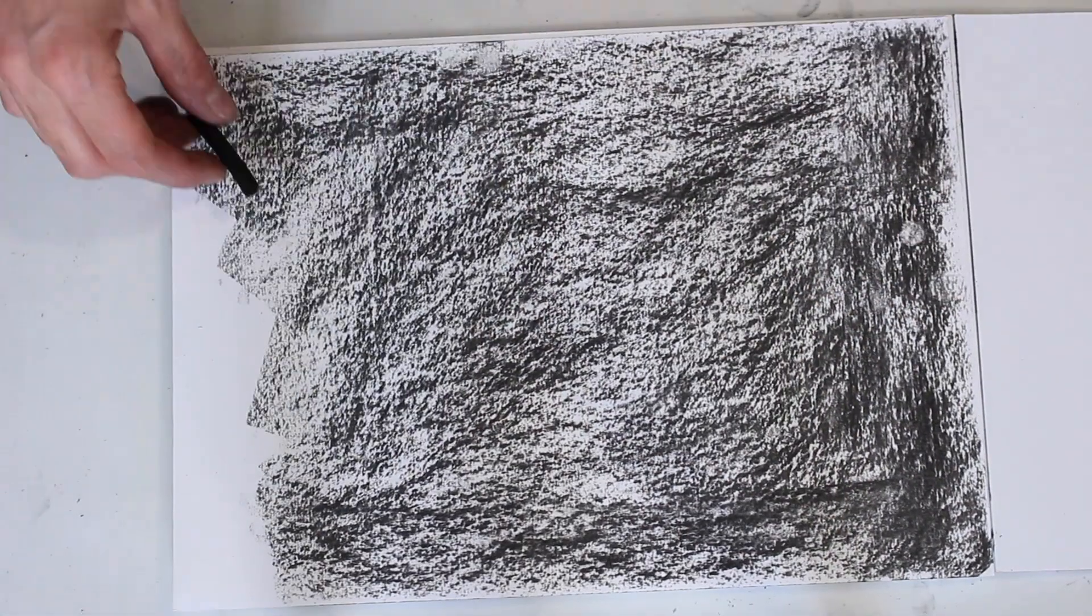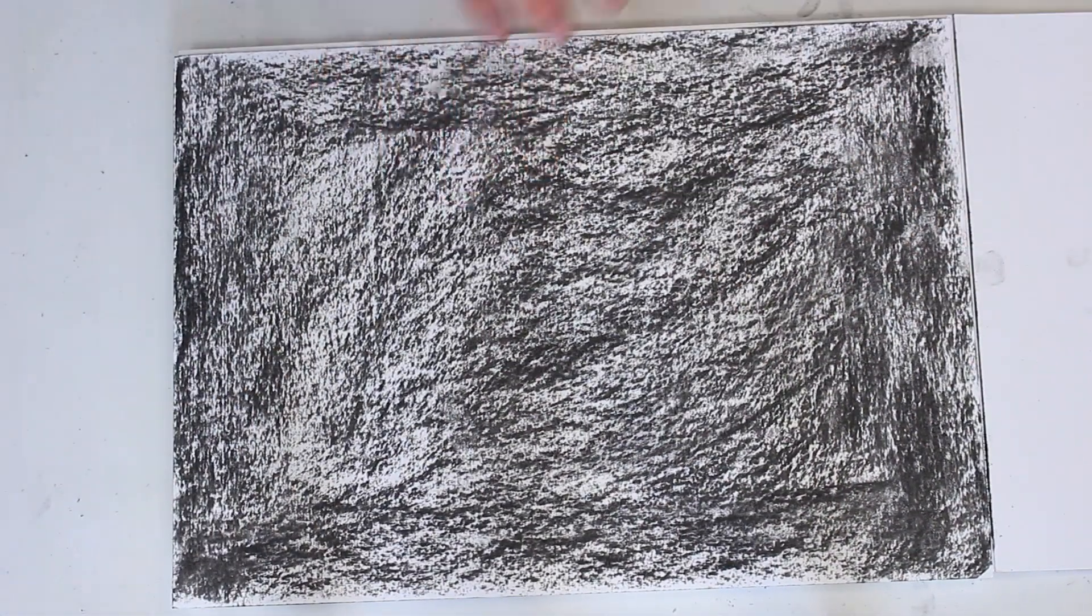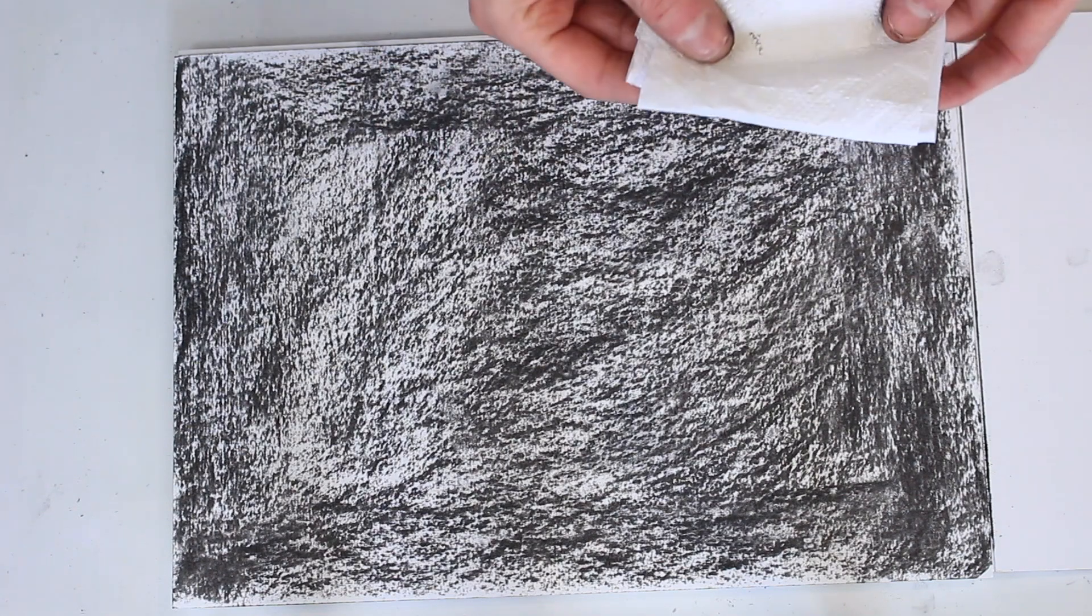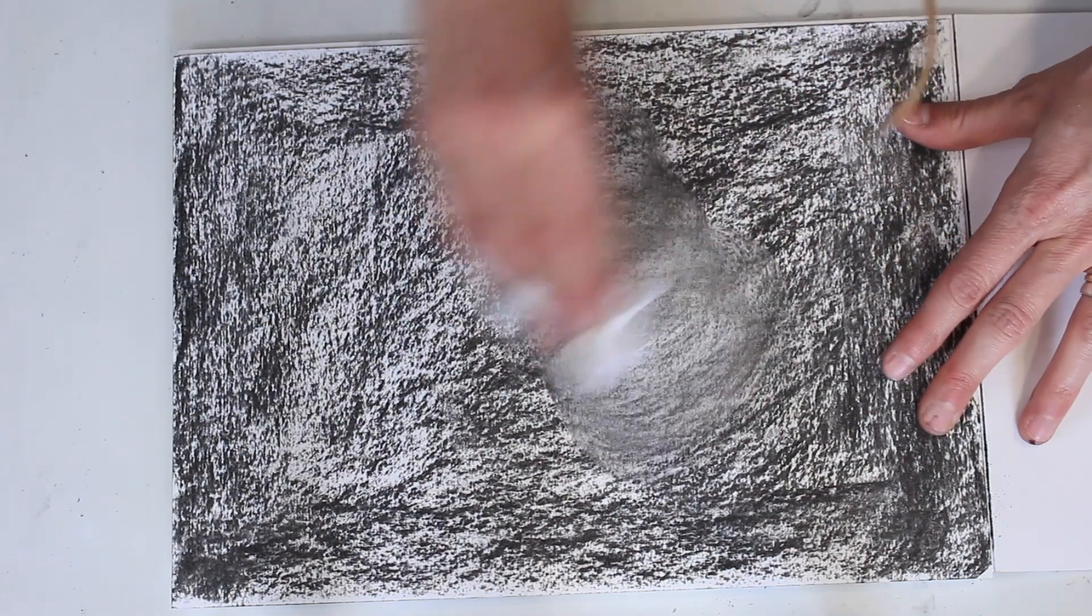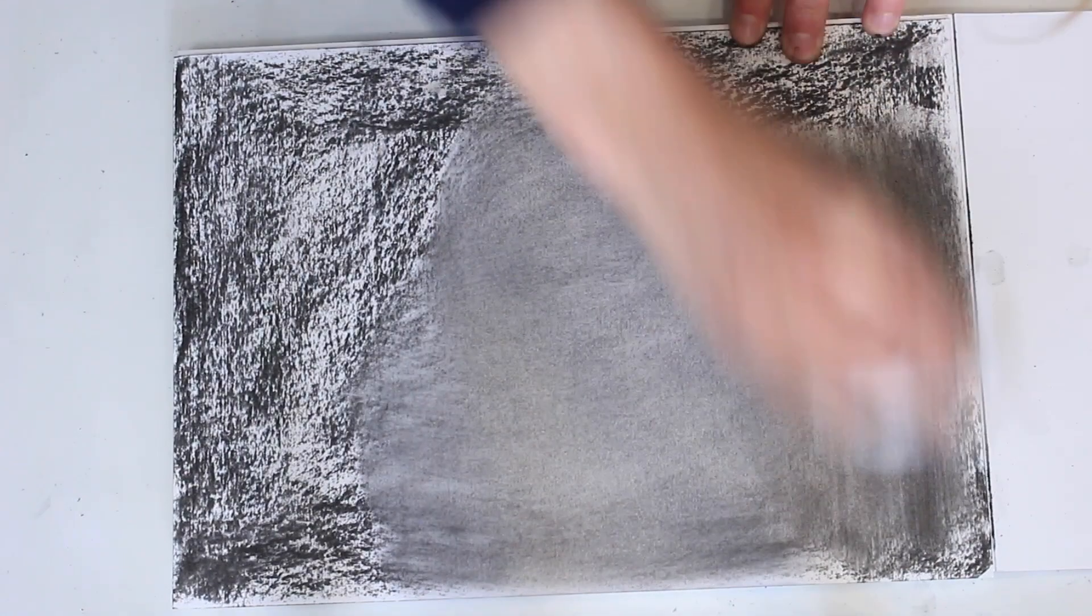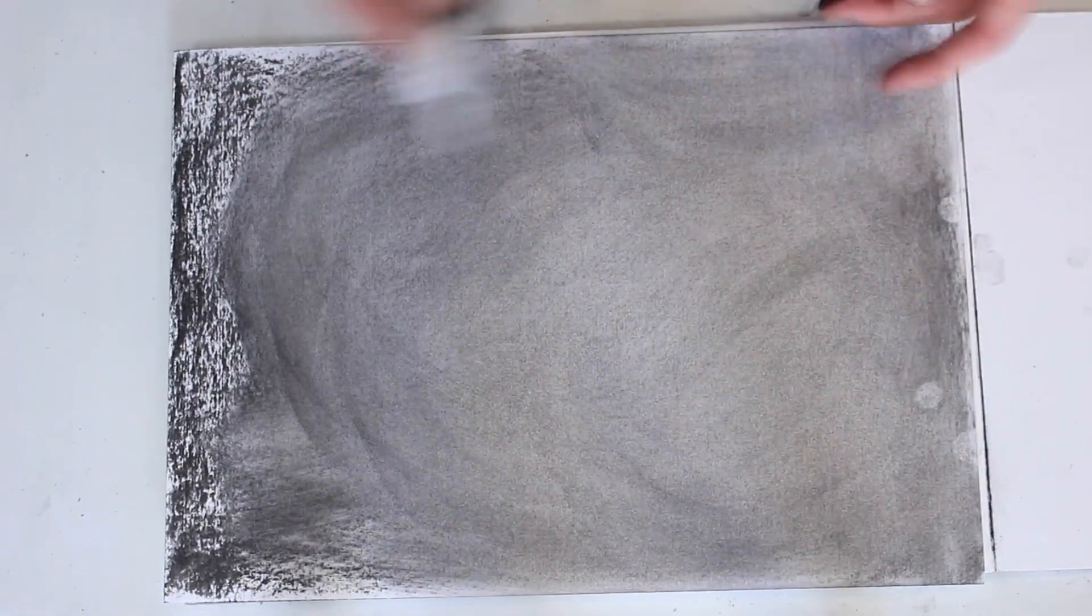So this is willow charcoal, and this is something that you will start a base with. Then we use something very simple which is toilet tissue or kitchen roll. Kitchen roll is great because you can just blend very smoothly. And then you have a couple of different erasers.